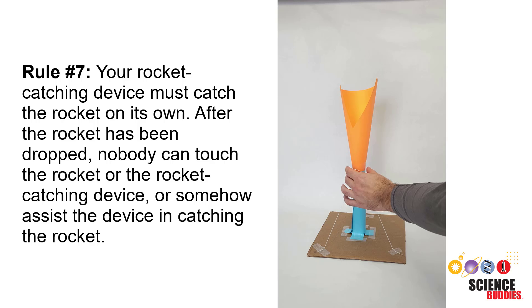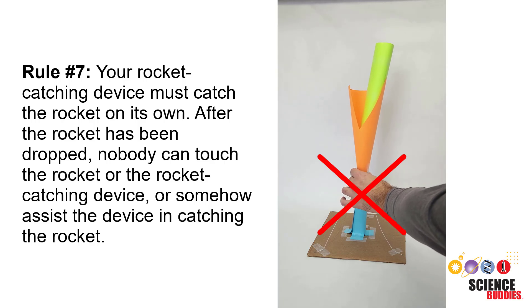Rule seven: Your rocket catching device must catch the rocket on its own. After the rocket has been dropped, nobody can touch the rocket or the rocket catching device or somehow assist the device in catching the rocket.